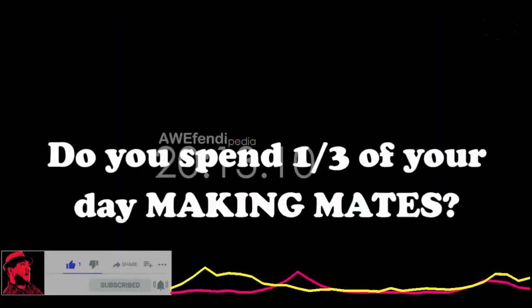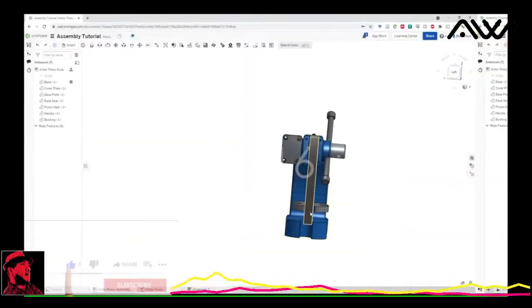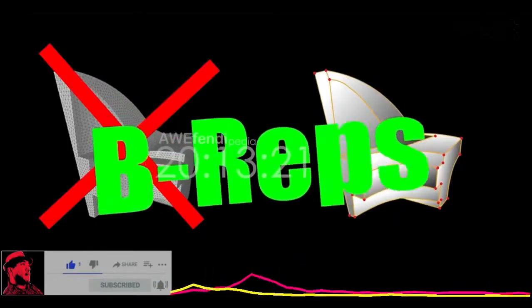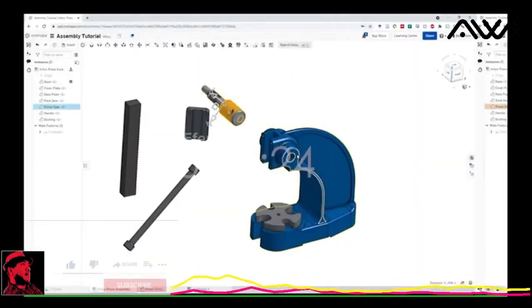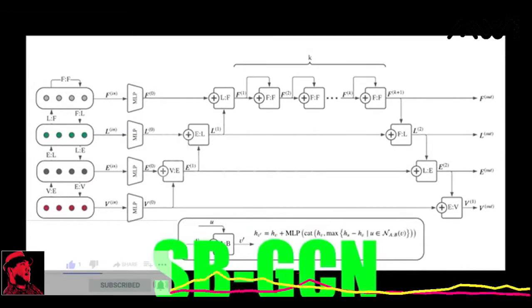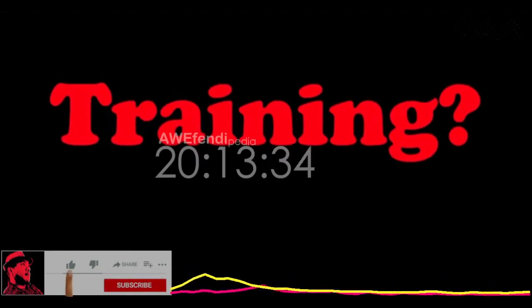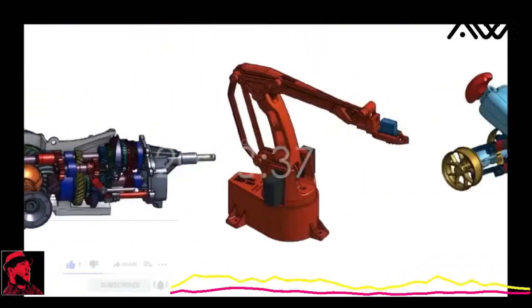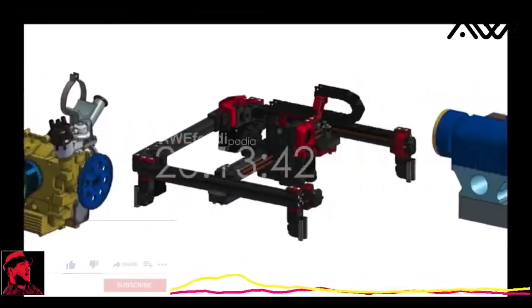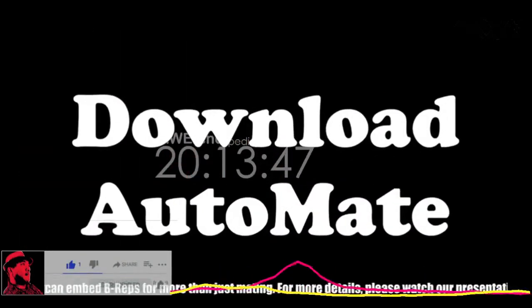Do you spend a third of your day making mates? Then you may be a mechanical CAD designer. Specifying how parts connect and move in an assembly is such a chore. You need precision and expertise since these aren't meshes, they're parametric boundary representations. You need Automate, the neural network solution to your mating problems. Automate runs a SBGCN, the new graph network that embeds topologies of any dimension. How will you train this? Well, I hope you like big data, because Automate comes with over 500,000 mates. That's a lot of mates. You can download the Automate dataset today for the low price of free. Automate suggests auto-completions to CAD mates. SBGCN can embed B-REPs for more than just mating. For more details, please watch our presentation.